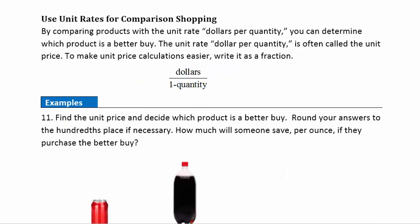Use unit rates for comparison shopping. By comparing products with a unit rate, dollars per quantity, you can determine which product is a better buy. The unit rate, dollar per quantity, is often called the unit price. So to make unit price calculations easier, write it as a fraction. And so here we have our unit price, some number of dollars per one quantity. This is a good way to use a unit rate to comparison shop, is this unit price.